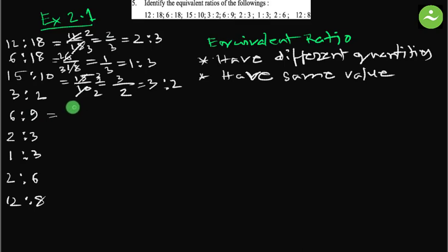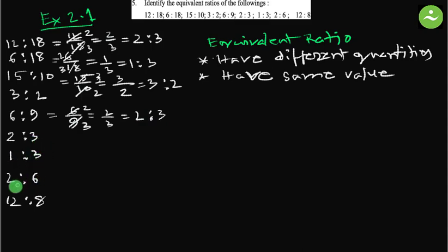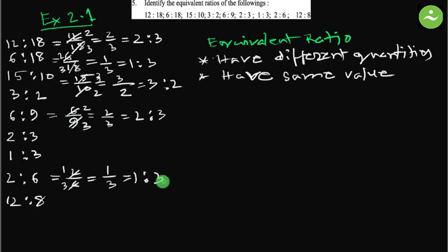3 is to 2 — no simplification needed. 6 is to 9 equals to 6 by 9. Divide both by 3 — this becomes 2, this becomes 3 — so 2 by 3, equals to 2 is to 3. 2 is to 3 — no need to simplify. 1 is to 3 — no need to simplify. 2 is to 6: divide both by 2, this becomes 1, this becomes 3, so 1 by 3, equals 1 is to 3. 12 is to 8: divide both by 4, this becomes 3, this becomes 2, so 3 by 2, equals to 3 is to 2.